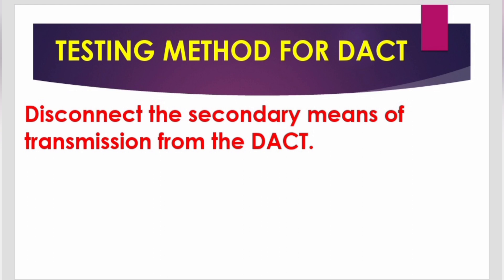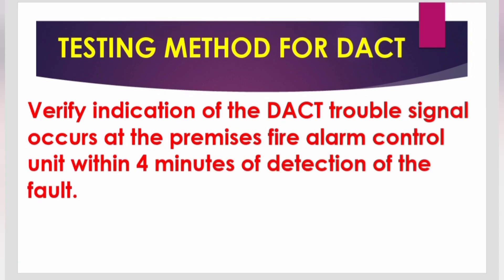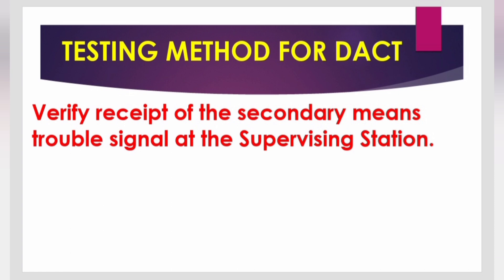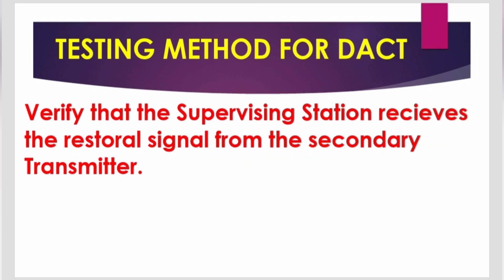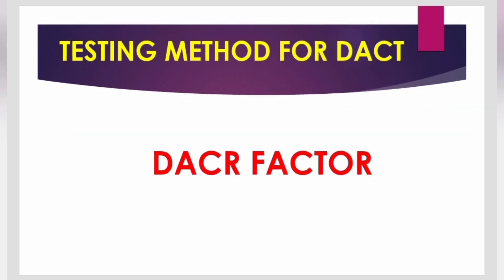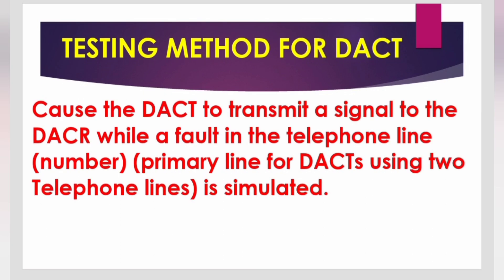When considering the secondary line factor, disconnect the secondary means of transmission from the communicator. Verify that the DACT trouble signal occurs at the premises fire alarm control unit within four minutes of detection of the fault. Verify receipt of the secondary means trouble signal at the supervising station. Restore the secondary means of transmission, reset the fire alarm control unit, and verify that the trouble signal returns to normal.